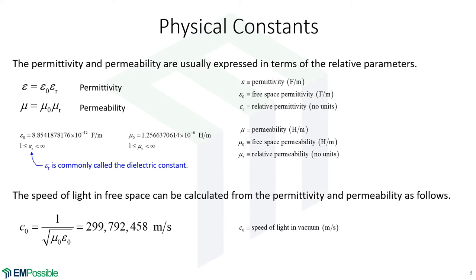From these constants, 1 divided by the square root of the relative permeability times the relative permittivity gives us the speed of light. This is an exact number because we now base the definitions of meters and seconds on it.